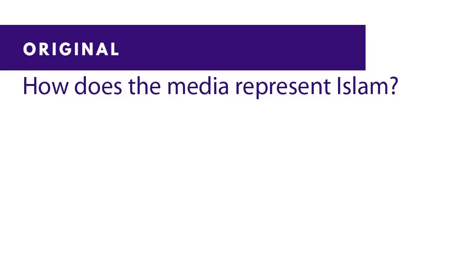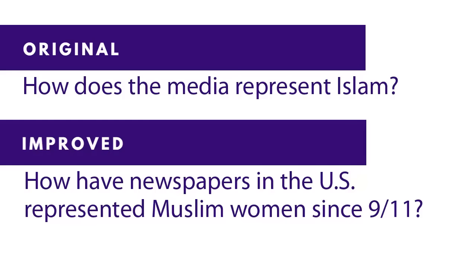Let's look at this question: how does the media represent Islam? It's focused on one issue, which is good, and requires some analysis. But it's not a good question because it's not specific enough — it should be clear about who, what, where, and when it's talking about. For example, media could be newspapers, TV, music, videos, or advertising. It could be media in Canada, South America, or India. Islam could mean the religion, some aspect of the religion, or people who are Muslim. A better question would be, how have newspapers in the US represented Muslim women since 9/11?